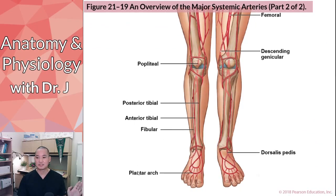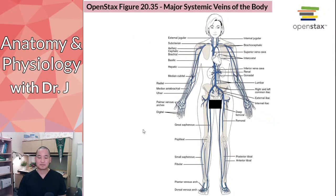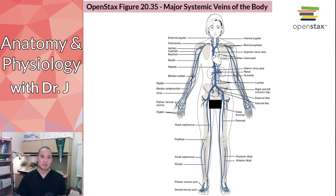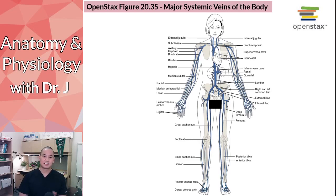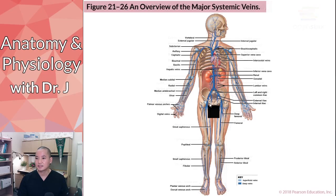Here are the major systemic arteries. The great thing about arteries and veins is that they typically run alongside each other — if there's a subclavian artery, there's a subclavian vein. They come in pairs, and often in left and right pairs too. By knowing the key words, you can infer both sides, though exceptions exist.